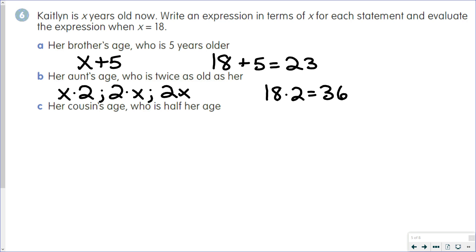Her cousin's age, who is half her age. So we could do x divided by 2. Or if it's half her age, we could take 1 half times her age. Either way works. So we do 18 divided by 2 or half of 18. Either way, we get the cousin, who is 9.